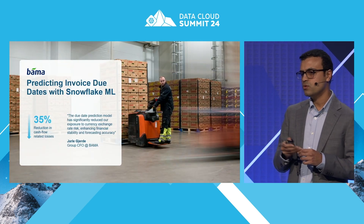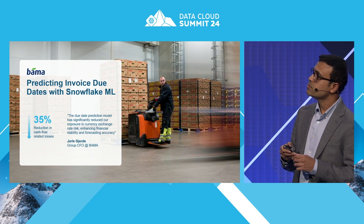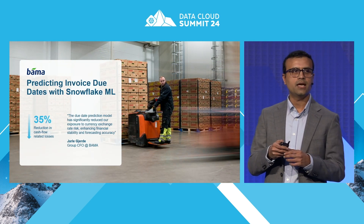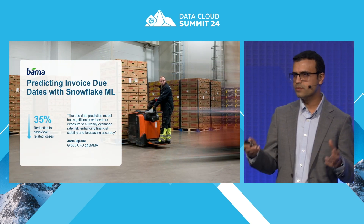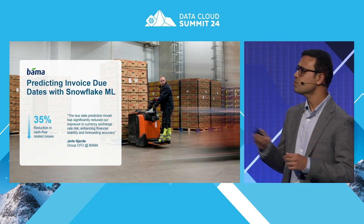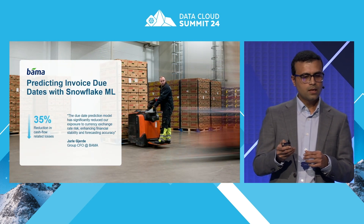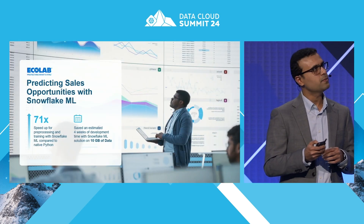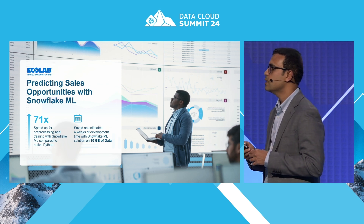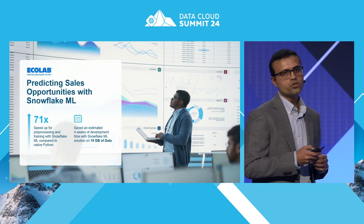There is Bama, which is a European food and vegetable distributor. They have used Snowflake ML to identify delivery dates and predict currency risk based on that, and adjust their hedging strategies — saving quite a bit of money as part of their cash flow from this model. And lastly, Ecolab has built a K-Means clustering model using Snowflake ML to segment their customers into multiple buckets and target promotions to them.